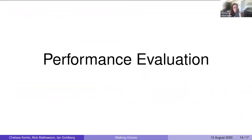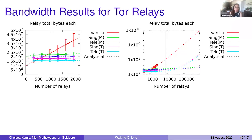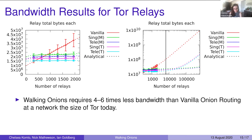Walking Onions protects against epistemic and route capture attacks because clients can verify the content within the SNPs and know they are equally as likely to select certain relays as every other client. Our simulations show that Walking Onions does improve the performance of anonymity networks like TOR. For relays, at a network the size of TOR today — about 6,500 relays — Walking Onions saves four to six times the bandwidth over vanilla onion routing, the protocol used in TOR today.